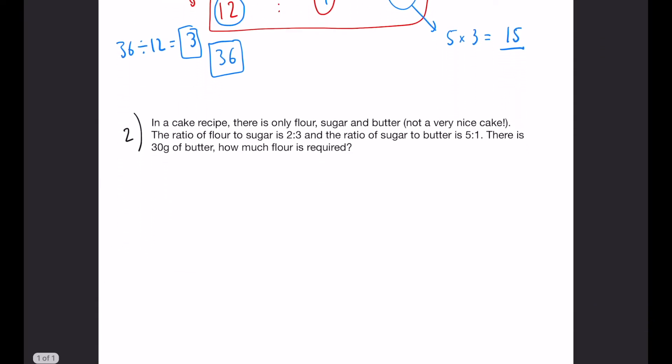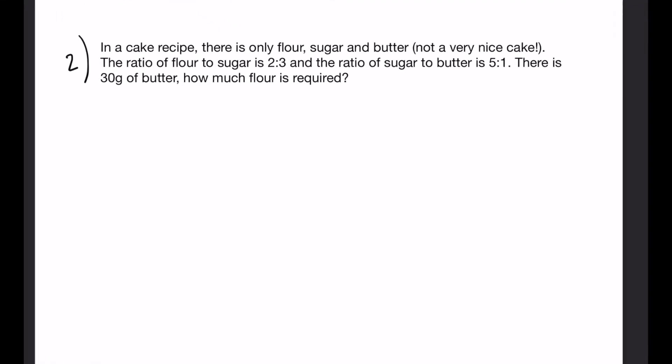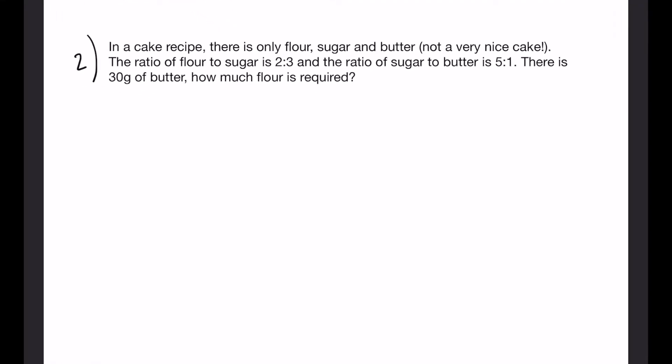So we're going to use a very similar idea for question 2, but you'll notice we have one slight difference. So in a cake recipe there is only flour, sugar and butter. The ratio of flour to sugar is 2 to 3. And the ratio of sugar to butter is 5 to 1.